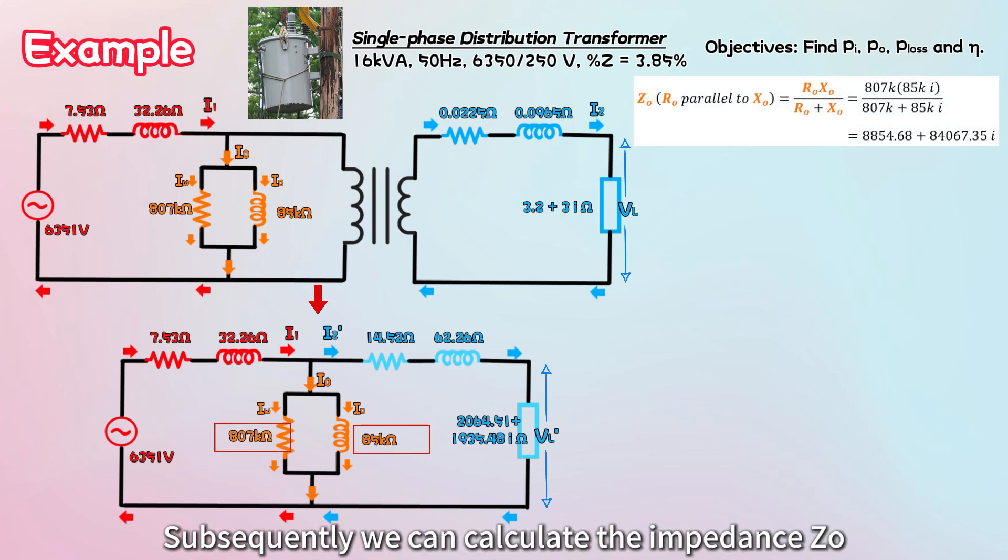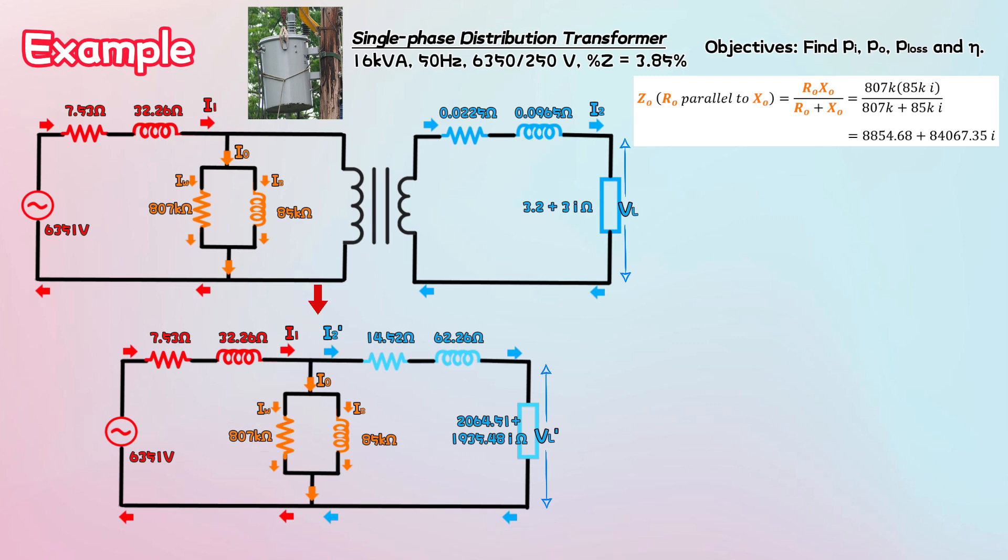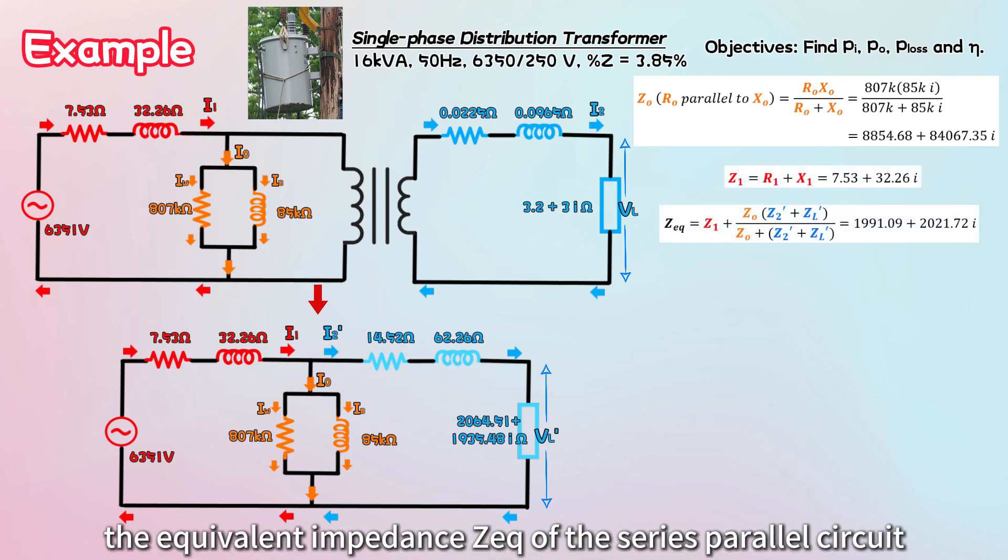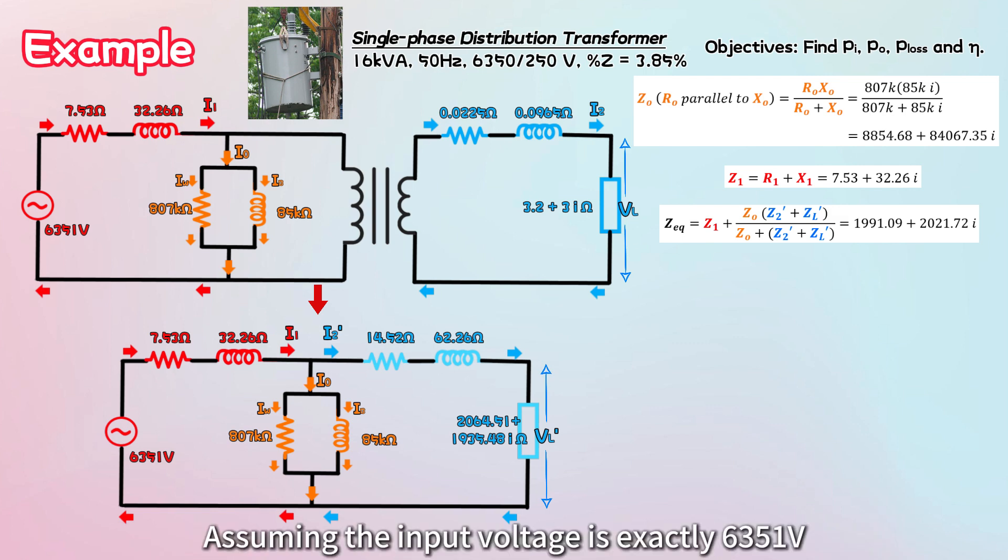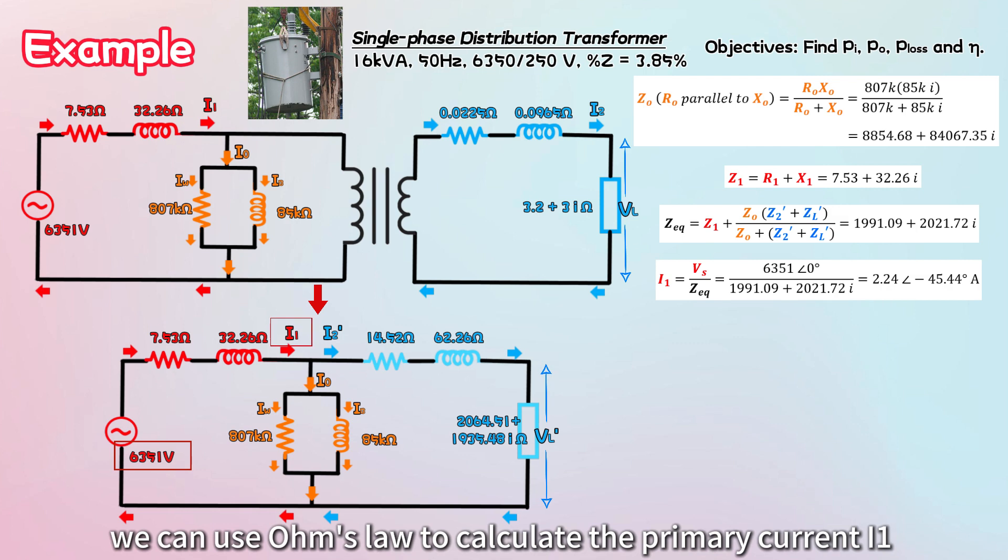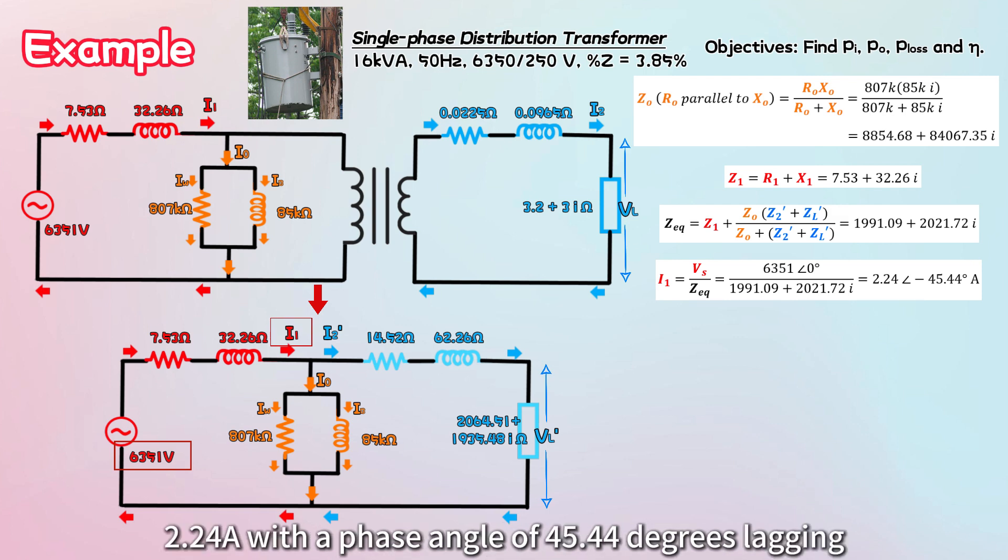Subsequently, we can calculate the impedance Z0 of R0 parallel to X0. Once we've done this, we can find the equivalent impedance of the series parallel circuit. Assuming the input voltage is exactly 6351 volts, we can use Ohm's law to calculate the primary current I1. The resulting primary current is 2.24 amps, with a phase angle of 45.44 degrees lagging.